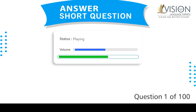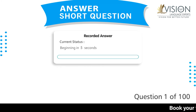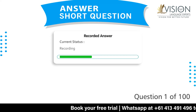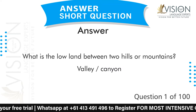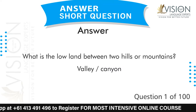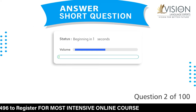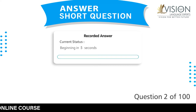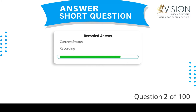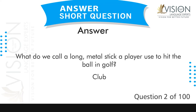What is the lowland between two hills or mountains? Valley or canyon. What do we call a long metal stick a player uses to hit the ball in golf? Club.